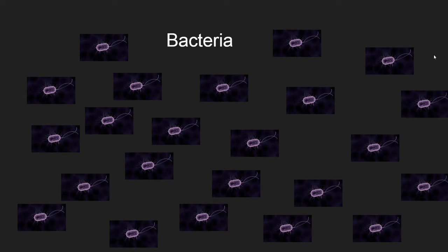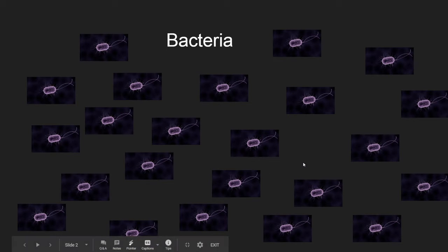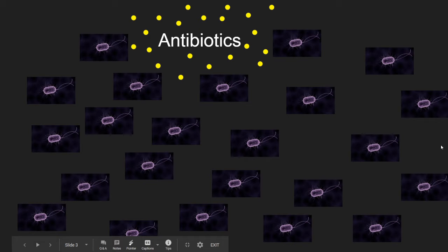I want to talk today about bacterial resistance — this is a major issue we've had recently. Here we have a bacterial colony: all these little purpley organisms with their flagella and cilia sticking out. We're going to add antibiotics because this particular group of bacteria have made you sick. They've come into your body, disrupting your homeostasis. You go to the doctor, the doctor gives you antibiotics, you take the pill.